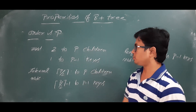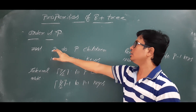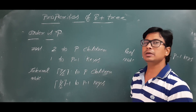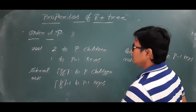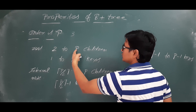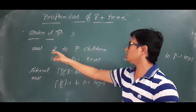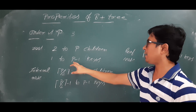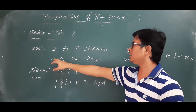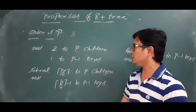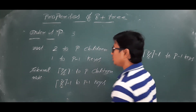If the order is p, then the root node will consist of minimum two children and maximum p children. If the order is three, then the root node will have minimum two and maximum three children. The number of keys a root node can consist of is minimum one and maximum p minus one. If p equals three, it will have minimum one key and maximum two keys.